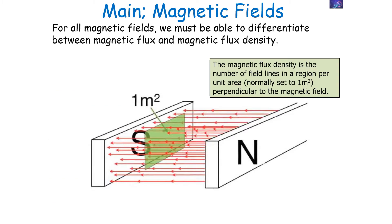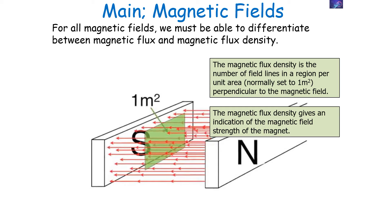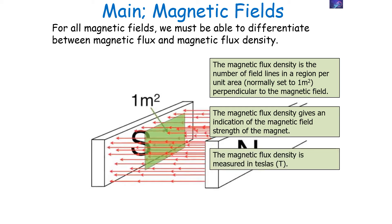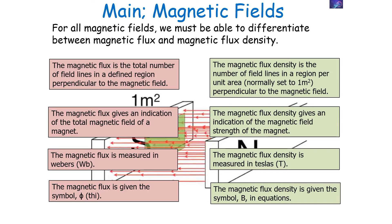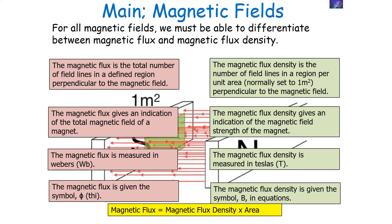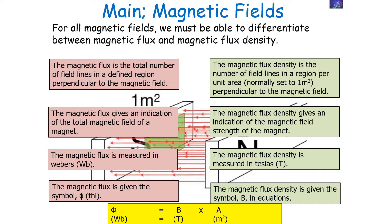The magnetic flux density is the number of field lines in a region per unit area — set to one metre squared — which is perpendicular to the magnetic field. The magnetic flux density gives an indication of the magnetic field strength of the magnet. It is measured in Teslas and given the symbol B in equations. We can link these two quantities with an equation: magnetic flux is equal to the magnetic flux density times the area, so Φ = BA, where Webers equals Teslas times metres squared.